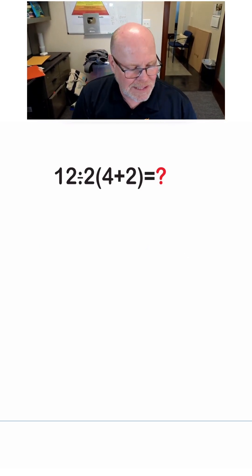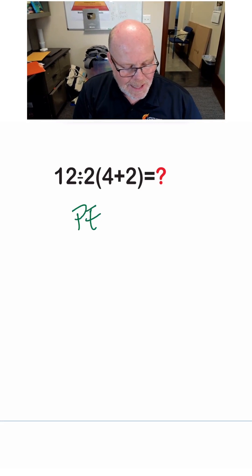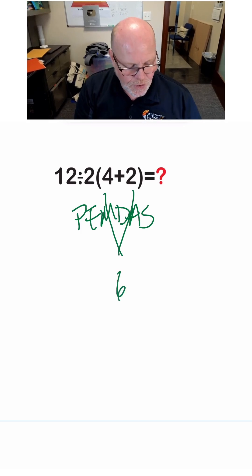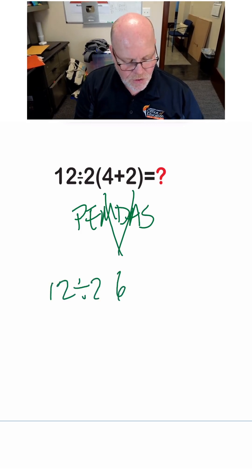That being said, we do know about Please Excuse My Dear Aunt Sally, in which case we would do the parentheses first. We're going to get 12 divided by 2 times 6.